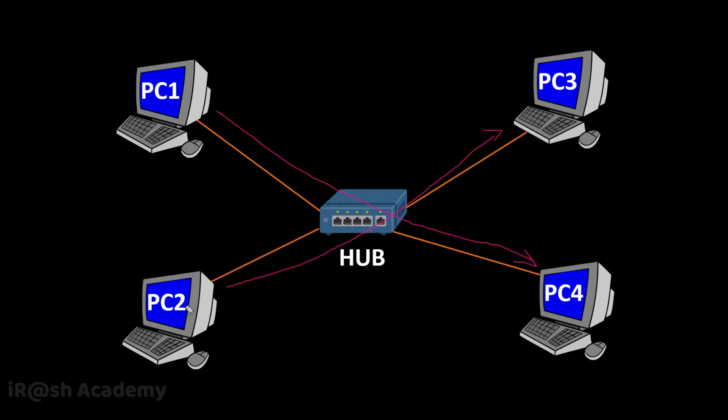PC2 will not send at the same time as PC1; it will wait until the path — the collision domain — is clear, and then send the data later. This means devices cannot send and receive simultaneously; they have to wait. This waiting period can take time depending on the data transfer in the single collision domain, which is why hubs are very slow compared to other network devices.